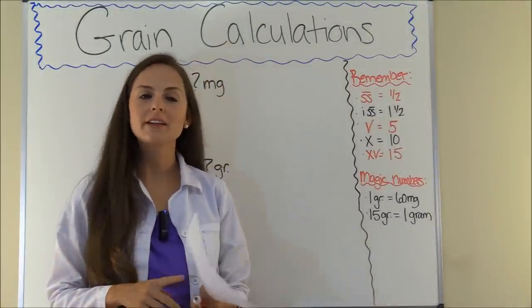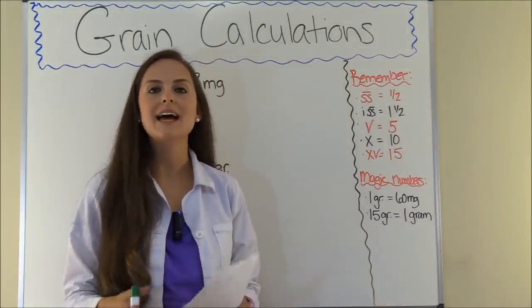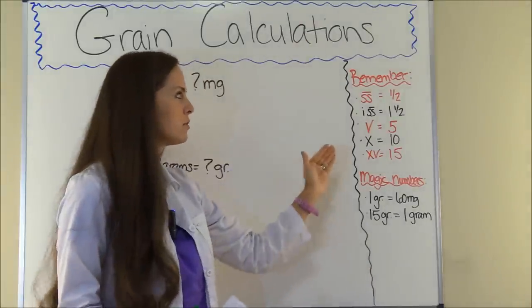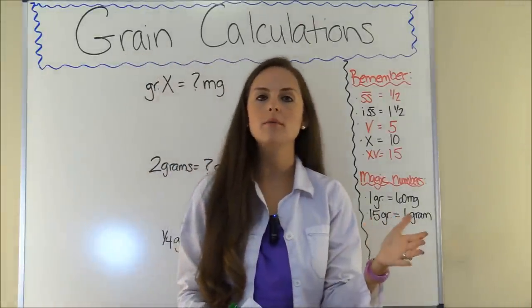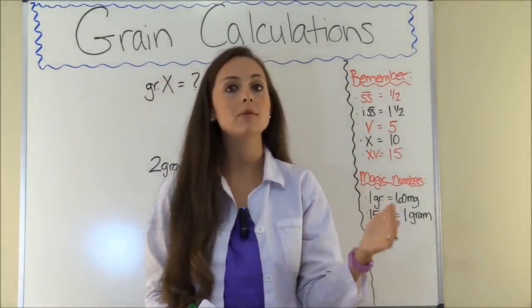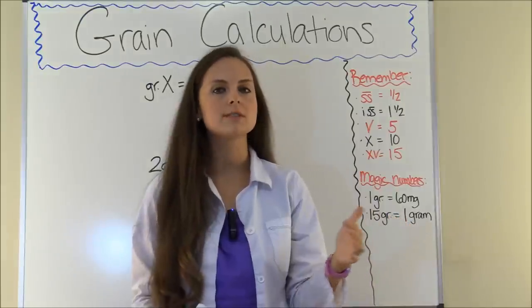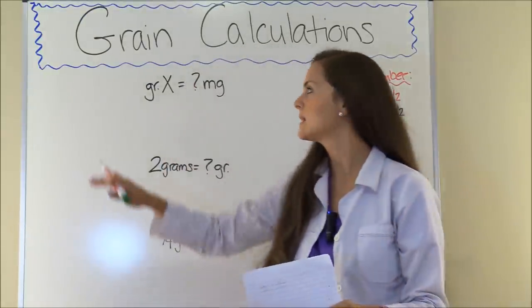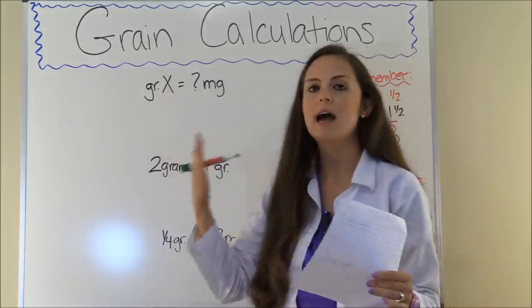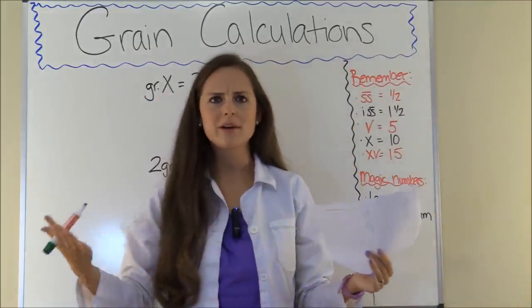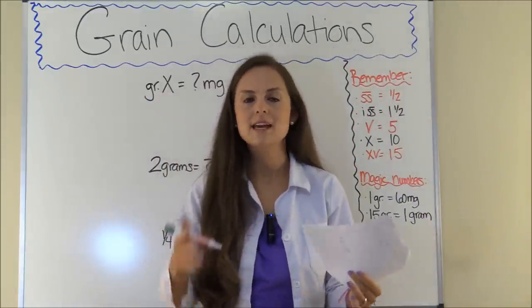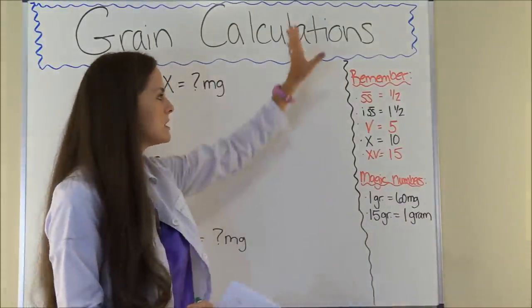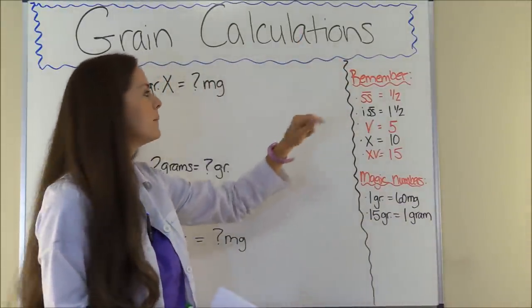Before we get started solving our grain calculation problems, let's go over some basic concepts. First thing: Roman numerals. A lot of times with grain problems, the question will be written out with a Roman numeral. So you need to know the most common Roman numerals used in these problems. For instance, this problem says grain X equals how many milligrams? X is the Roman numeral for 10, so it's 10 grains.